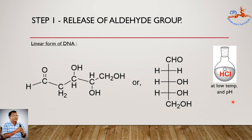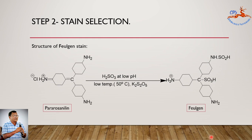We have to stain the exposed aldehydes with the Feulgen reagent. Look at the Feulgen reagent structure. This Feulgen reagent is prepared with the basic Fuchsin structure. Basic Fuchsin is composed of a mixture of pararosaniline, rosaniline, and magenta. Formation of the stain is done with the action of sulfurous acid at low pH and low temperature at 50 degrees centigrade with the presence of potassium metabisulfite. During this reaction, the amine groups of the Fuchsin get attached with the sulfur compound and take the form of Feulgen stain.